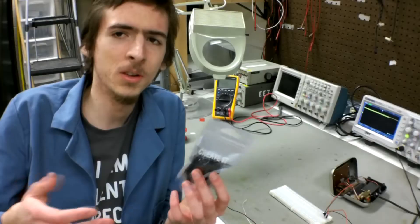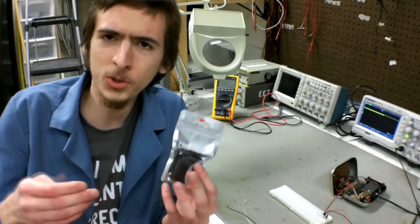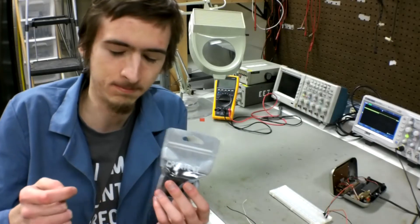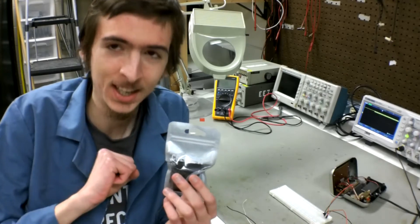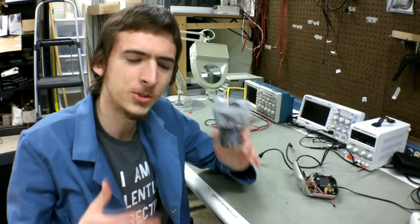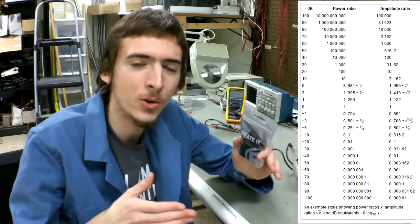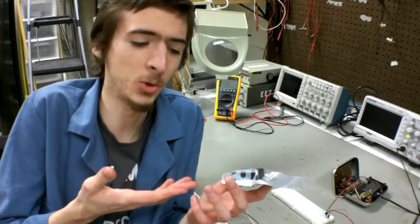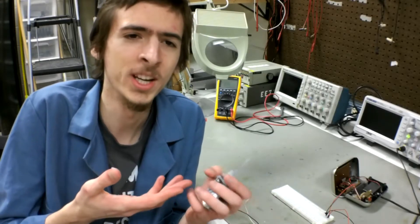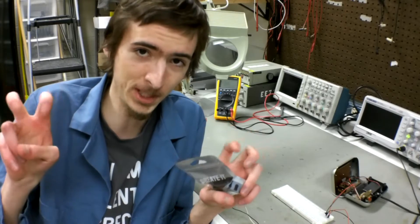Decibels are a strange scale, because every increase in 10 decibels represents 10 times the power output. 102 decibels, while below the pain threshold, is classified as extremely unpleasant.